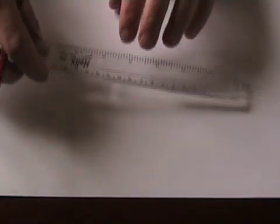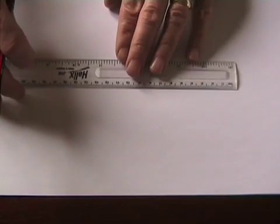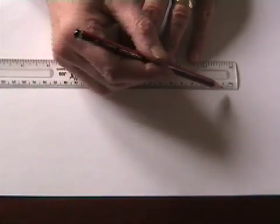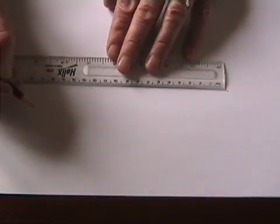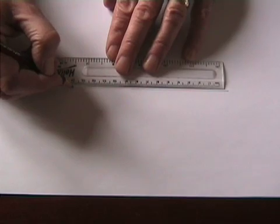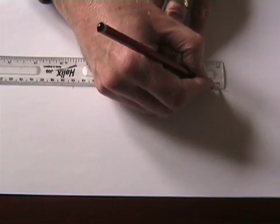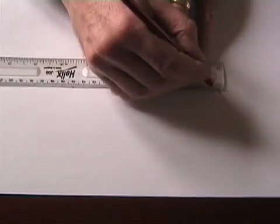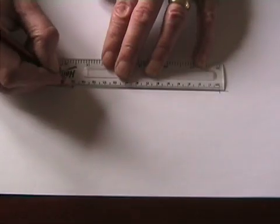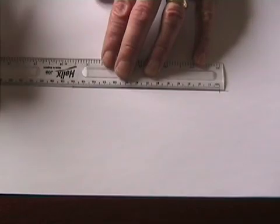The second thing I'm going to demonstrate is the perpendicular bisector of a line. So I'm going to draw a simple line segment and mark off let's say 14cm. So I've drawn a simple line and marked off a line segment of 14cm and I'm going to bisect it.